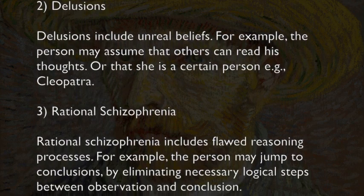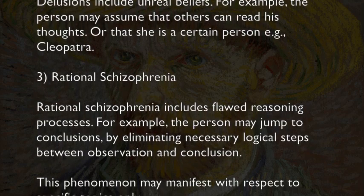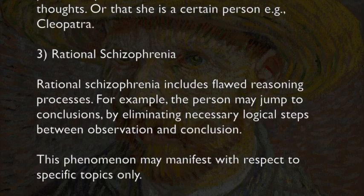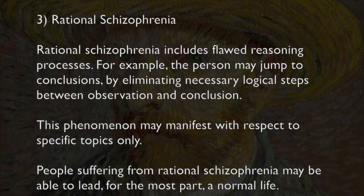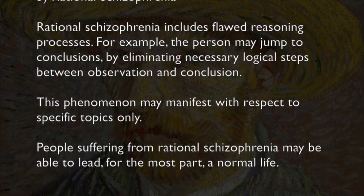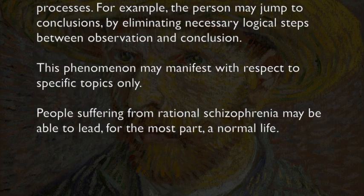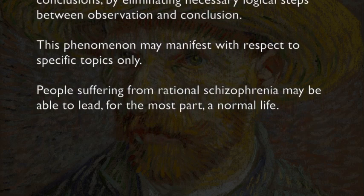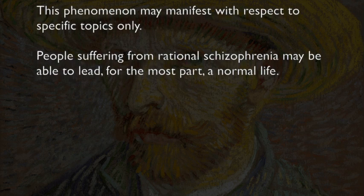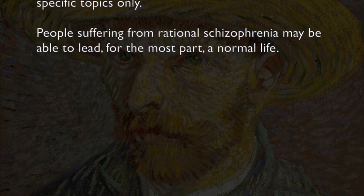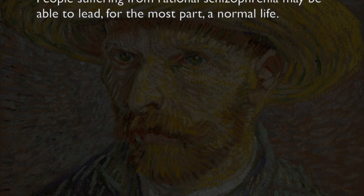Third: Rational Schizophrenia. Rational schizophrenia includes flawed reasoning processes. For example, the person may jump to conclusions by eliminating necessary logical steps between observation and conclusion. This phenomenon may manifest with respect to specific topics only. People suffering from rational schizophrenia may be able to lead, for the most part, a normal life.